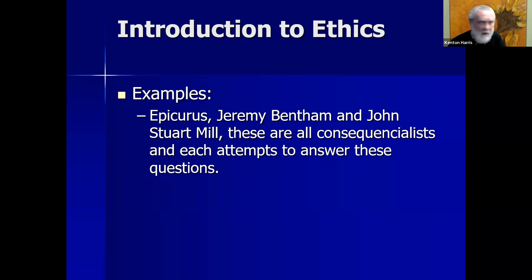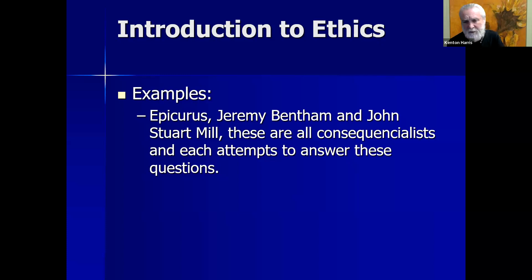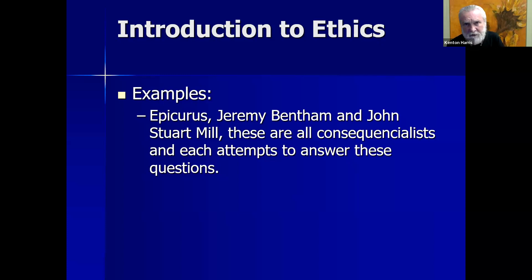In terms of philosophers who were consequentialists, we're going to be looking at Epicurus, an ancient Greek hedonist. Then we're going to look at more recent philosophers Jeremy Bentham and John Stuart Mill, both writing in the 18th century. We may also look at even more recent consequentialists and see how these individuals attempt to answer some of the questions we've just raised.